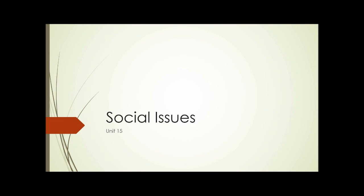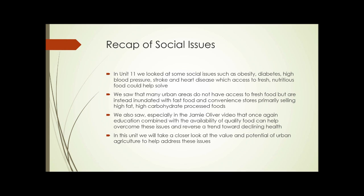Unit 15: Social Issues. We're going to do a really quick recap here. In Unit 11, we looked at some of the social issues such as obesity, diabetes, high blood pressure, stroke, and heart disease, which access to fresh nutritious food could help solve. We also saw that many urban areas do not have access to fresh food but are instead inundated with fast food and convenience stores primarily selling high-fat, high-carbohydrate processed foods. We also saw, especially in the Jamie Oliver video, that education combined with the availability of quality food can help overcome these issues and reverse a trend towards declining health. In this unit we'll take a closer look at the value and potential of urban agriculture to help address these issues.